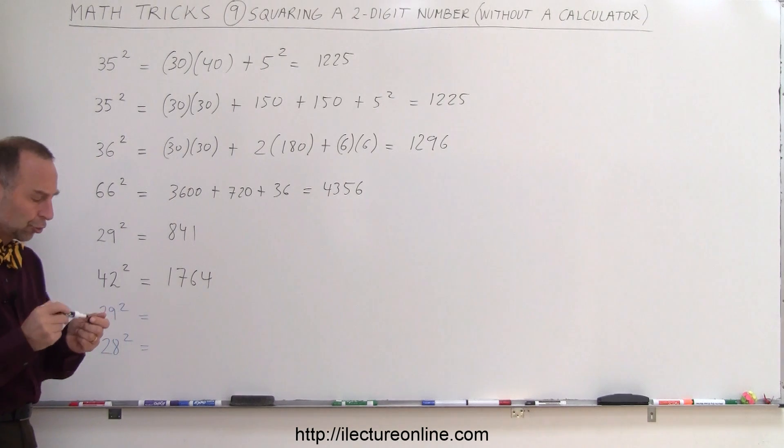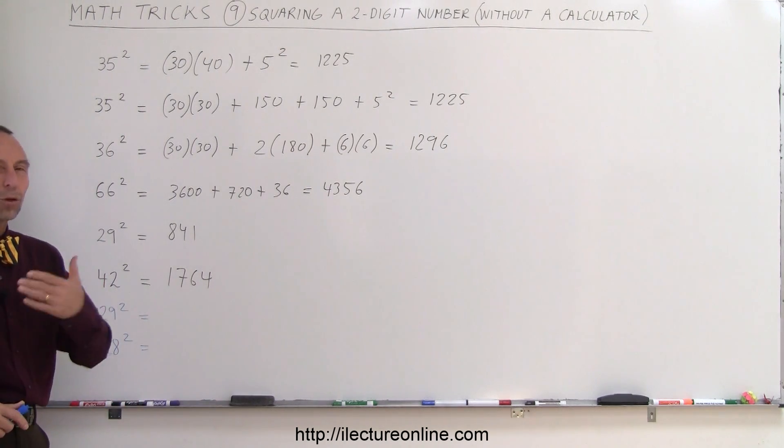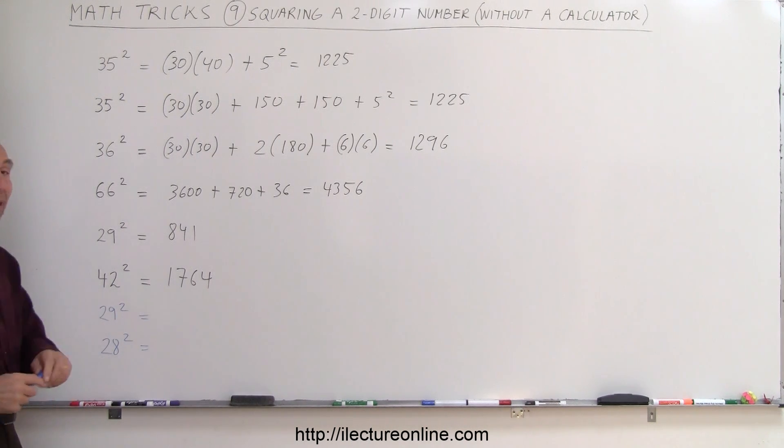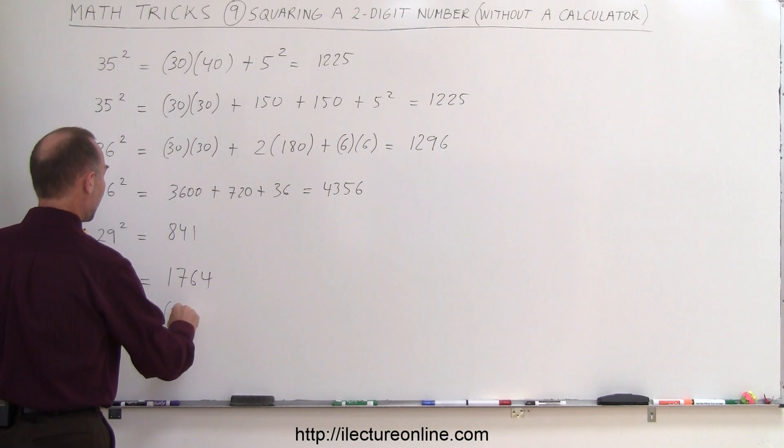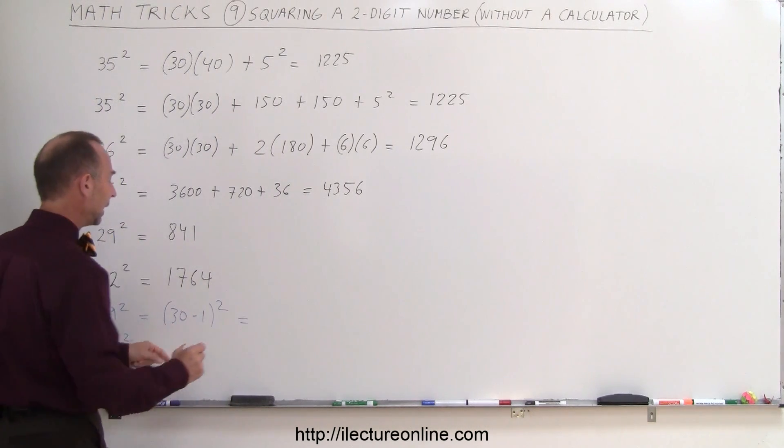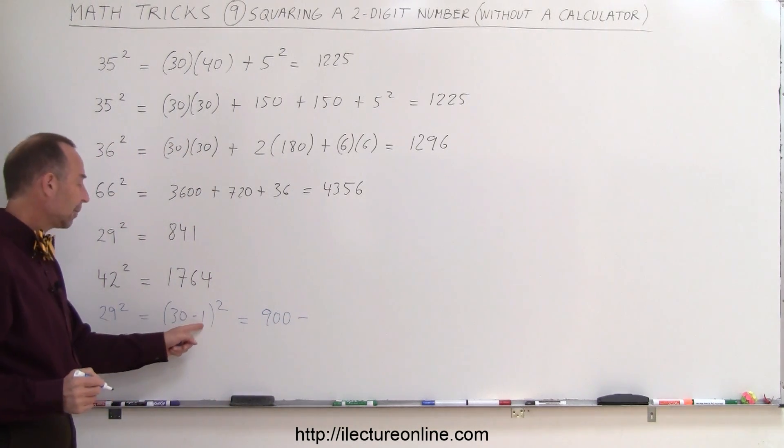Now there's another neat little trick that we can do, is let's say we have a number that is almost like 20 or 30 or 40 or 50, like 29 or 28, you can think of 29 squared as actually being 30 minus 1 squared.